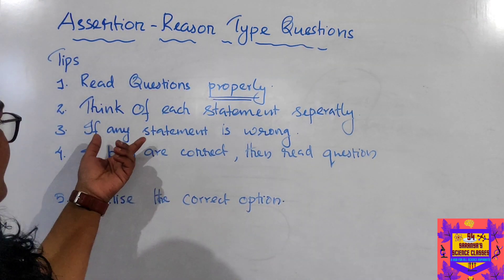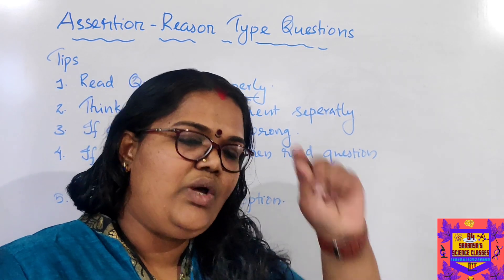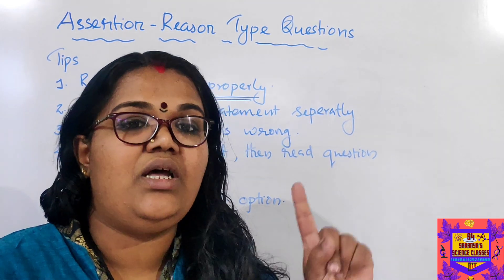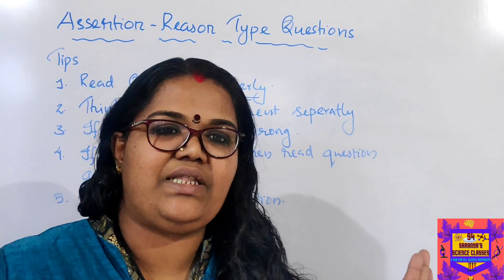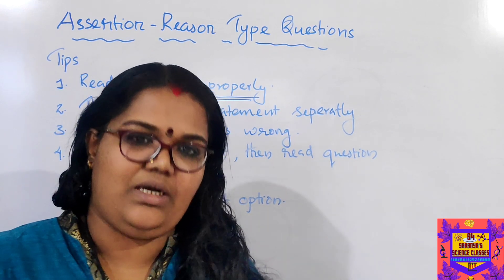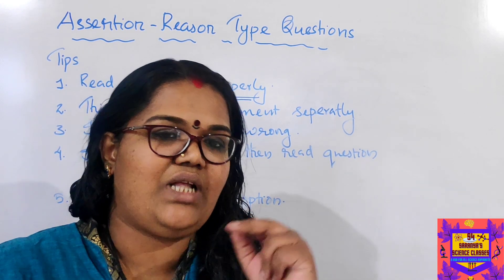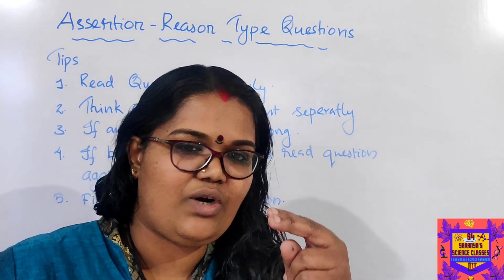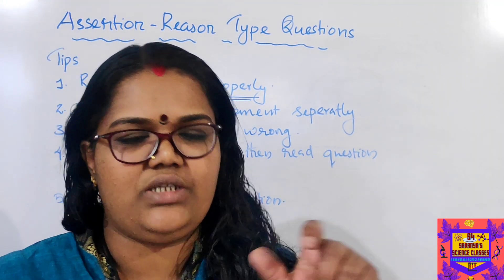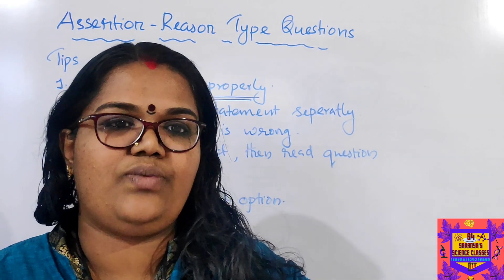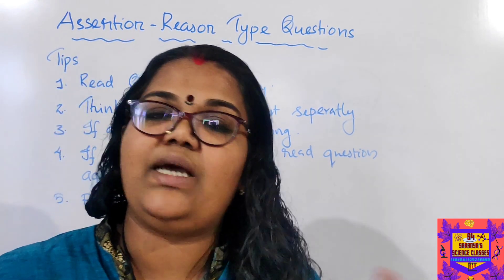Then think about the reason independently — whether it is correct or not. That's the thing you have to check first. If any statement is wrong, there's no tension — you can easily identify the answer because in Class 10, one of the last two options will apply: either assertion is false and reason is true, or assertion is true and reason is false. So if any one statement is wrong, your answer is straightforward.